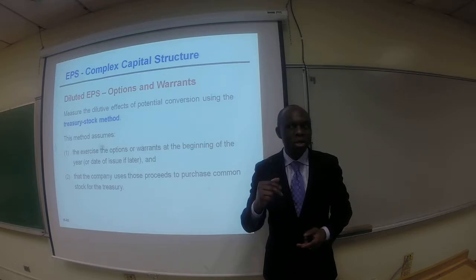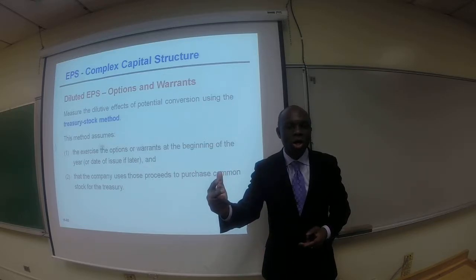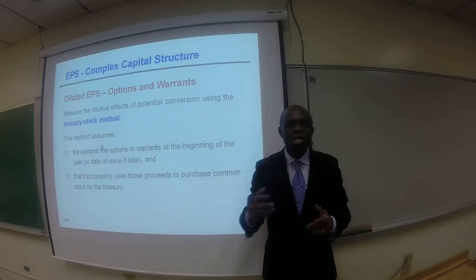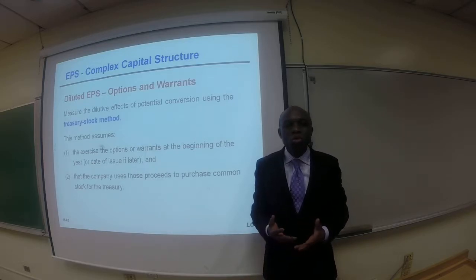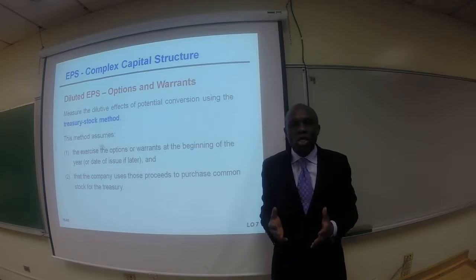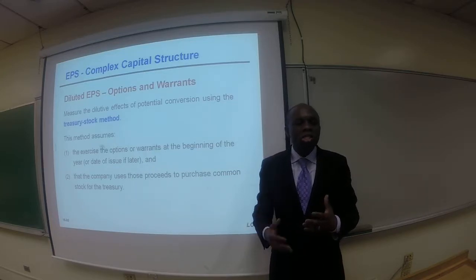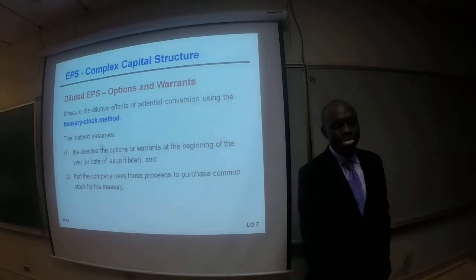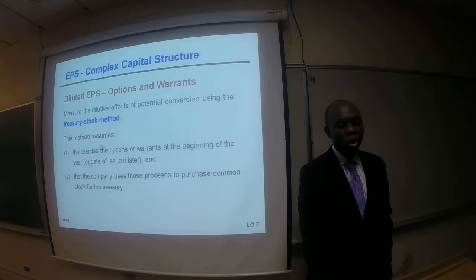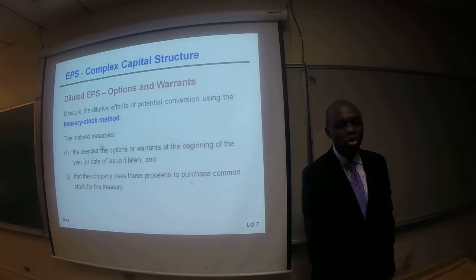Remember, when the company goes out and purchases stock in the financial market or stock market, what do we call that? Treasury stock. That is how they came up with the name of the method we use when we take options and warrants into consideration in calculating diluted EPS. We call this the Treasury Stock Method. This method assumes the exercise of the options or warrants at the beginning of the year, or at the date of issue if later, and that the company uses those proceeds to purchase common stock for the treasury.